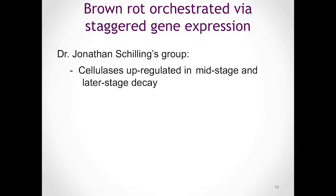Jonathan Schilling's group in the BBE here on campus recently published a transcriptome study that corroborated the two-step mechanism that we know about brown rot decay. Specifically, Schilling's group concluded that cellulases during brown rot decay, specifically with Postia placenta, are upregulated in mid-stage and later-stage decay.